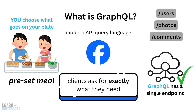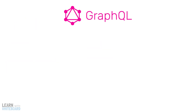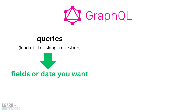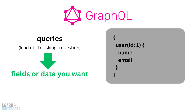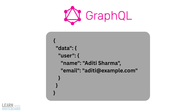Here's the key idea. With GraphQL you write queries, kind of like asking a question, to specify exactly what fields or data you want from the server. For example, this query means: get me the user whose ID is one, but I only want their name and email. The server then responds with just that. So you get no extra data, no multiple calls — you get just what you asked for.